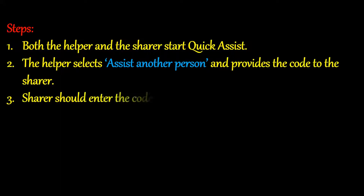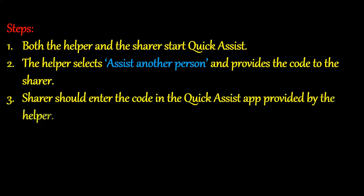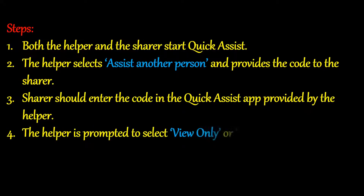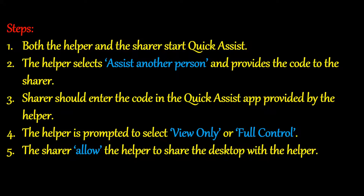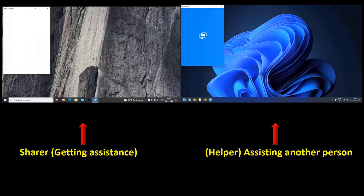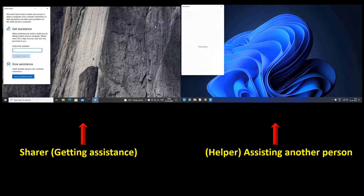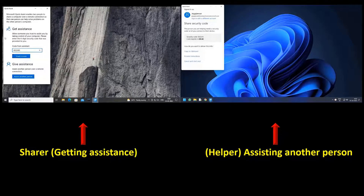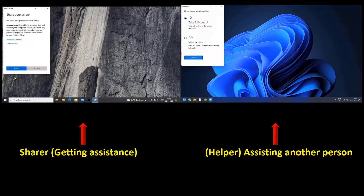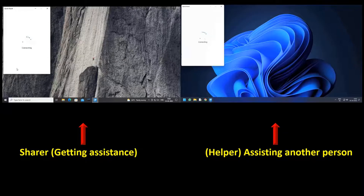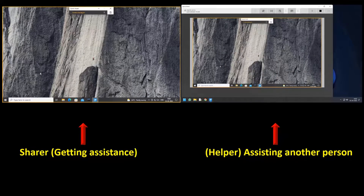The sharer should enter the code in the Quick Assist app provided by the helper. The helper is prompted to select 'View only' or 'Full control'. The sharer allows the helper to share the desktop, and the connection gets established.